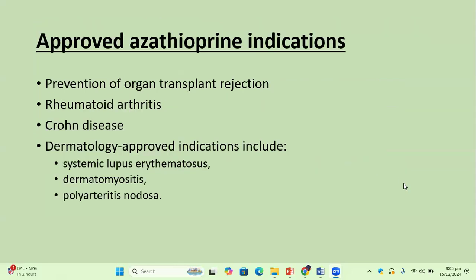Approved azathioprine indications include prevention of organ transplant rejection, which is the indication in which azathioprine is used the most, then rheumatoid arthritis and Crohn's disease. The dermatological approved indications include SLE, dermatomyositis, and polyarteritis nodosa.